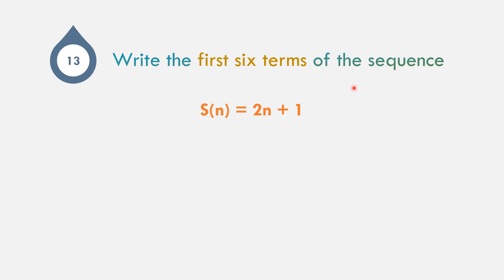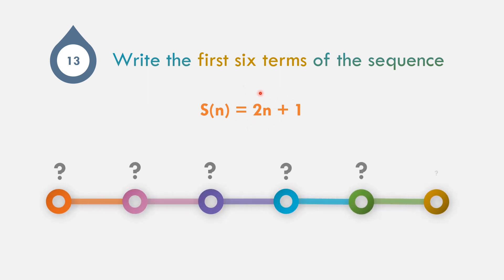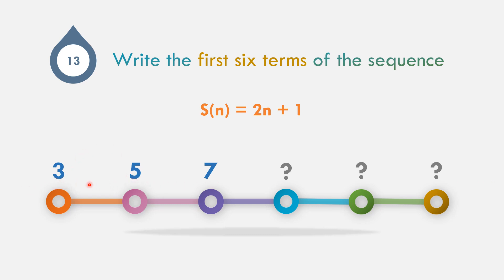In example number 13, find the first six terms of the sequence where s(n) equals 2n plus 1. Replace n by 1 through 6: 2 times 1 plus 1 is 3, 2 times 2 plus 1 is 5, 2 times 3 plus 1 is 7. The pattern adds 2 each time: 7 plus 2 is 9, 9 plus 2 is 11, 11 plus 2 is 13. The first six terms are 3, 5, 7, 9, 11, and 13.